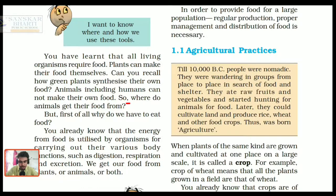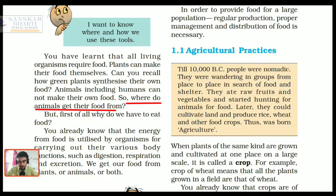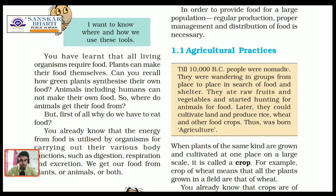Here comes the next question: where do animals get their food from? Animals, which include human beings, are heterotrophs and get their food from plants, other animals and animal products. Why do we have to eat food? Food provides energy and energy helps organisms to perform different body functions.